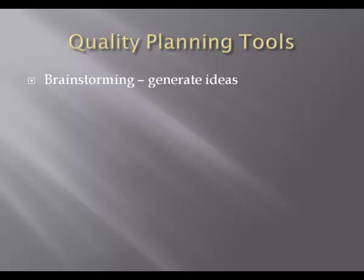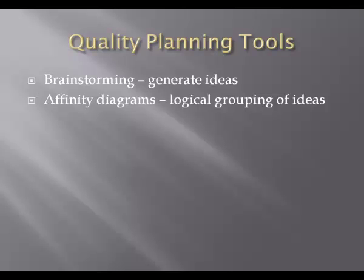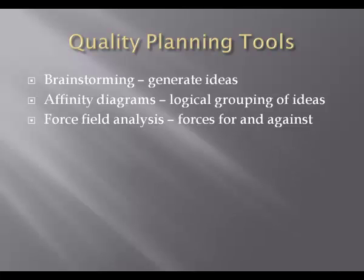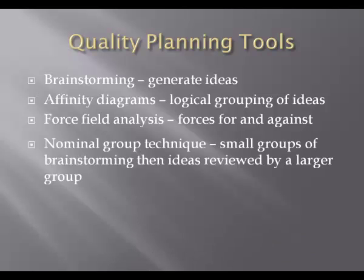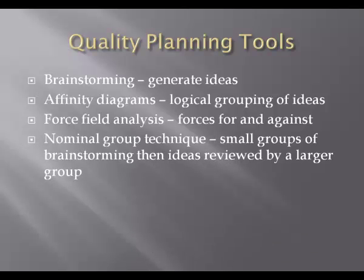Some quality planning tools you'll need to be familiar with for your PMP exam. First, brainstorming — you generate ideas on how to ascertain the expected level of quality. An affinity diagram is like brainstorming, but you group ideas based on similarities so that brainstorming and lateral thinking can focus on certain portions of the project. A force field analysis is an examination of the forces for and against your project and their impact, influence, and interest on the project. The nominal group technique is similar to brainstorming, but ideas are ranked by a smaller group and then reviewed by a larger group.